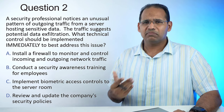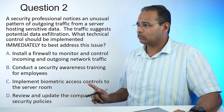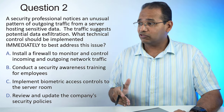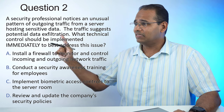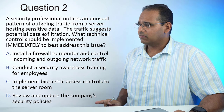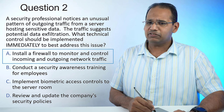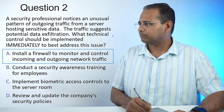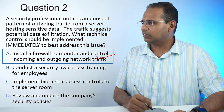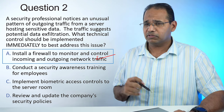Conducting security awareness training is more of an administrative control. Implementing biometric access to control the server room is more physical and wouldn't stop data from leaving the organization. Reviewing and updating the company security policy is more of an administrative control. The best answer is firewall, because a firewall is considered a technical type of control.